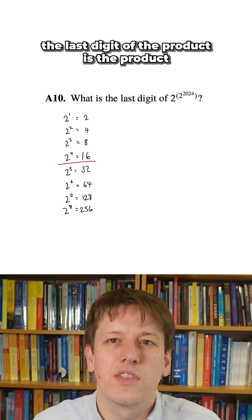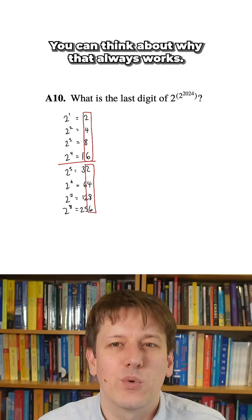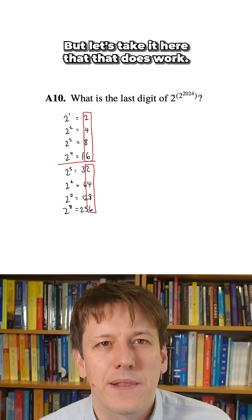That's because when you multiply two numbers, the last digit of the product is the product of the last digits. You can think about why that always works, and again, much more about that in my courses. But let's take it here that that does work.